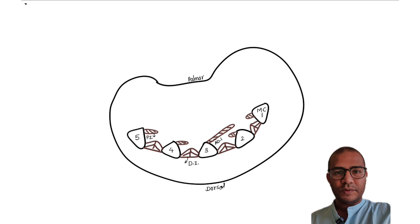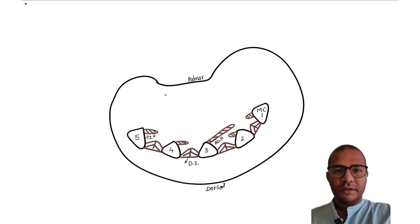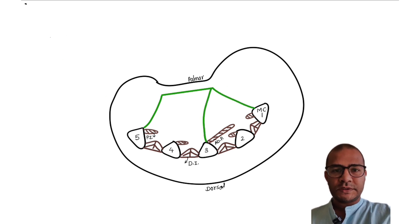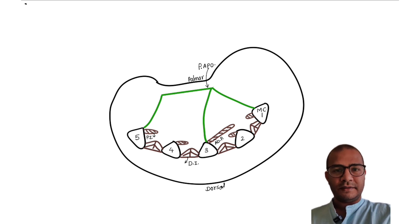Next we will show palmar aponeurosis in this diagram. From the palmar aponeurosis we will draw medial and lateral palmar septum and also intermediate palmar septum going towards the third metacarpal. We can see two compartments here — one on the medial side and one on the lateral side.